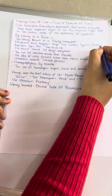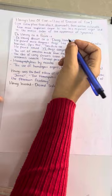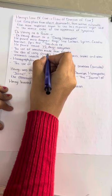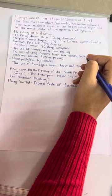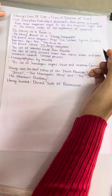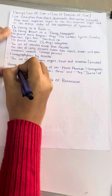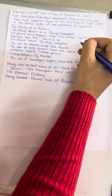Lachesis, Lysine, Crotalus horridus, Apis mellifica, Theridion, etc. He proved around 72 drugs altogether on himself. The use of remedies made from nosodes, the idea of using poisons taken from insects, poisons, secretes, snakes, venomous creatures, animal poisons basically. That idea of nosodes was given by Herring. Homeoprophylaxis by nosodes. The use of homologous organs, tissues and secretions and sarcoids. As a prover, why do you say a daring homeopath? He proved most dangerous medicines on himself.